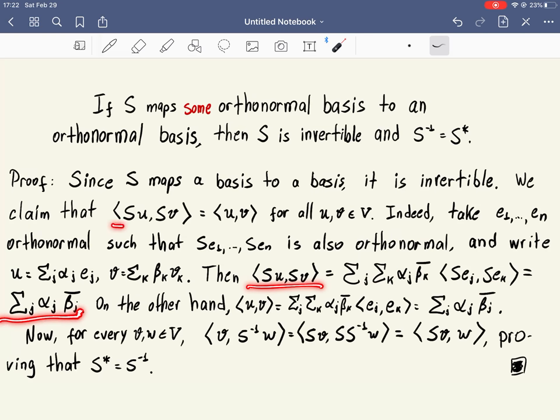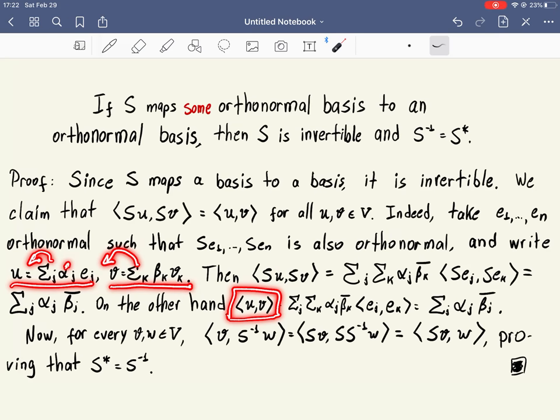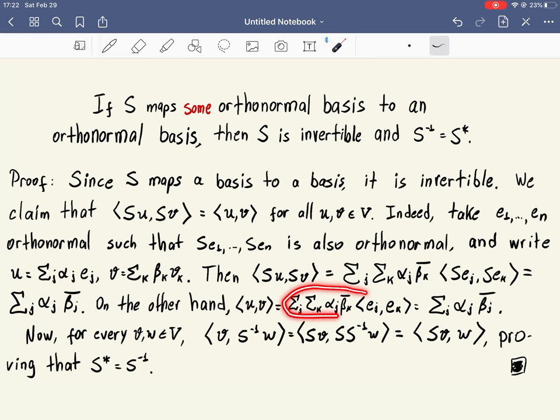So we found an expression for SU, SV. On the other hand, we're trying to show that SU, SV equals U, V, so let's expand UV. U is this, V is the sum. The sum goes out of the inner product. The scalar also goes out. Here this one goes out but with complex conjugate, so we get this.